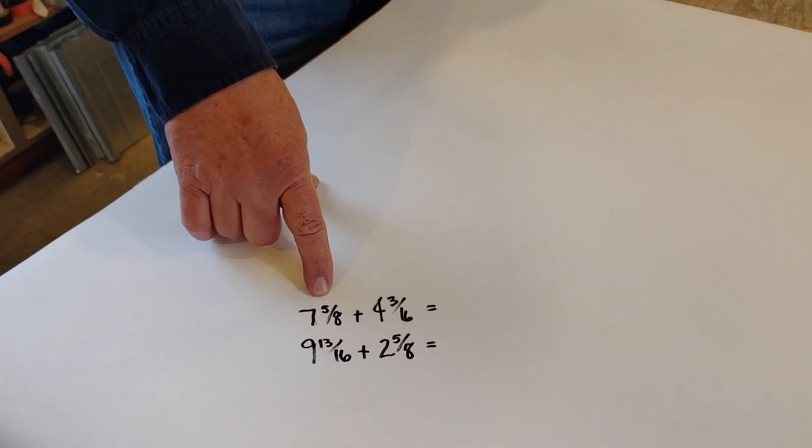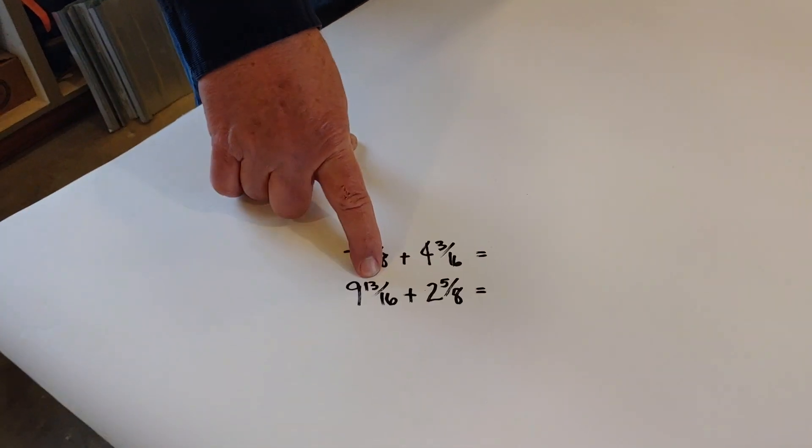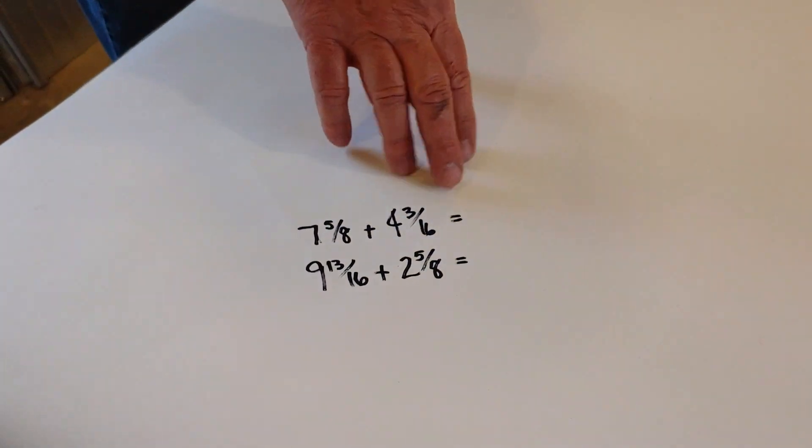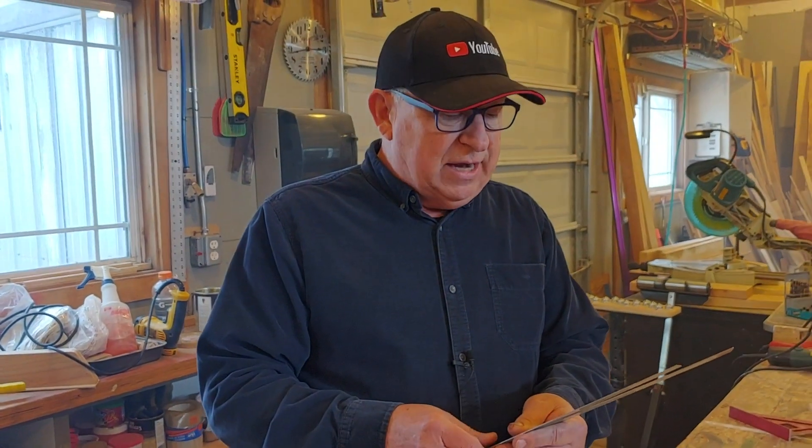Here's a couple of fraction type of things. We're going to let the ruler solve for us. We're going to add 7 and 5/8ths plus 4 and 3/16ths and see what we get. And we're also going to do 9 and 13/16ths plus 2 and 5/8ths. This also works the opposite way where I can actually subtract. But let's just do the addition right now.